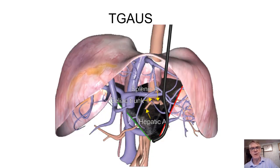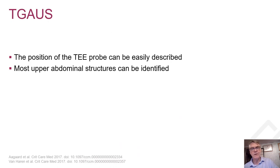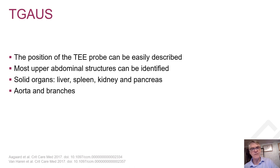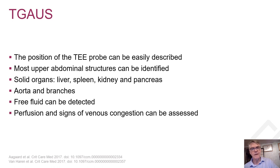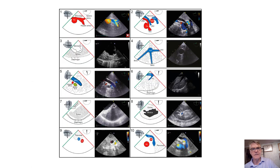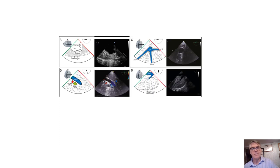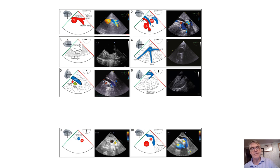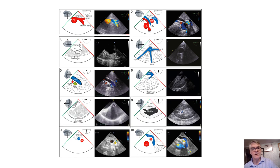TEGUS — transgastric abdominal ultrasound — allows us to identify most upper abdominal structures: all solid organs, the aorta and its branches. We can detect free fluid, and also monitor signs of venous congestion and renal perfusion. There are basically 10 views that can be used to provide information on the upper abdomen. These views are divided by probe orientation: at 12 o'clock is the transgastric view; turning right shows the inferior vena cava, portal vein, and hepatic vein; at six o'clock you see the large vessels of the abdomen and the pancreas; and turning left reveals the spleen and kidney.